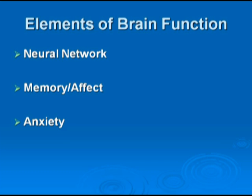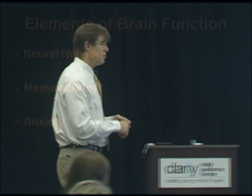Moving from neural networks to looking at memory and emotion — memory and affect are put together for a reason on this screen. Memory and emotion are constructs, things that researchers and theoreticians try to make sense of, but they're actually very, very intertwined. One definition of memory is that experience changes the shape and function of the brain, and then the shape and function of the brain are forms of memory.